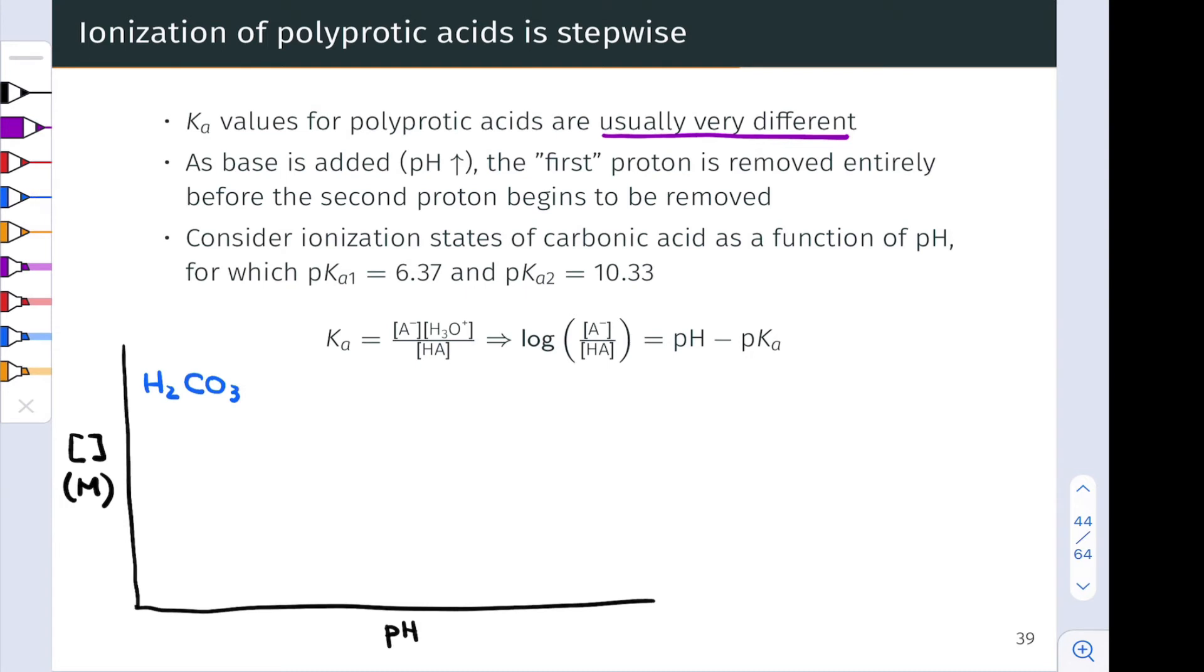On the low end we have H2CO3. As the pH increases we start to build in the conjugate base HCO3 minus and as the pH gets even higher we build in the conjugate base of HCO3 minus which is CO3 2 minus.